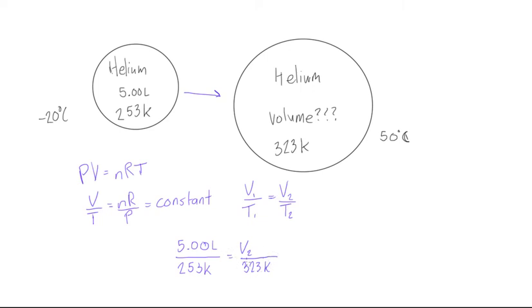Okay perfect, so now all we do is rearrange this a little bit to isolate V2, and then we can solve. So this is the same as saying this is just 5.00 liters times 323 Kelvin, and then this is over 253 K. So we can cancel out our Kelvin units, and we're left with 5 times 323 divided by 253. If you just punch that into your calculator, we will get our V2, our final volume after heating is going to be 6.38 liters.